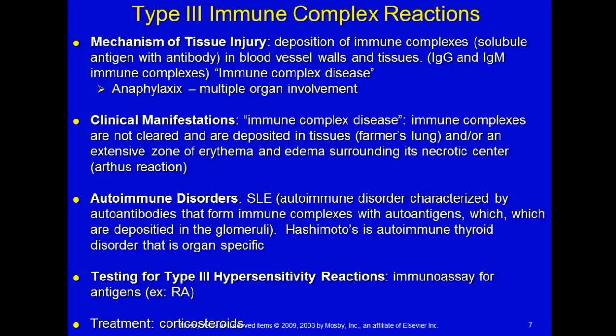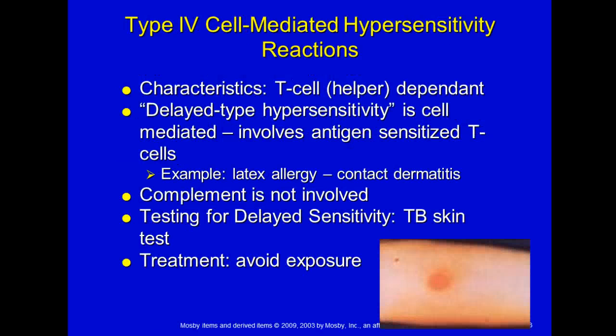Autoimmune diseases in the Type 3 category include lupus — an autoimmune disorder with auto-antibodies forming immune complexes with auto-antigens deposited in the glomeruli, causing kidney failure — and Hashimoto's thyroiditis, an organ-specific autoimmune thyroid disorder where antibodies attack the thyroid. Testing for Type 3 hypersensitivity uses immunoassay for antigens, such as rheumatoid factor for rheumatoid arthritis or anti-nuclear antibodies for lupus. Treatment is usually a steroid.